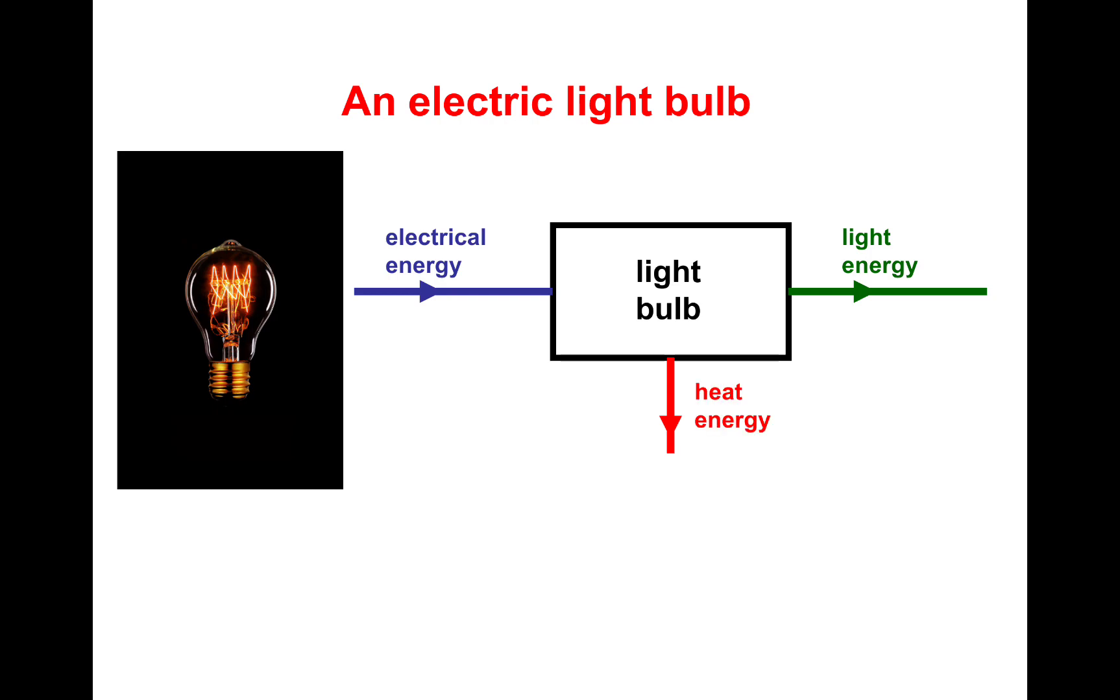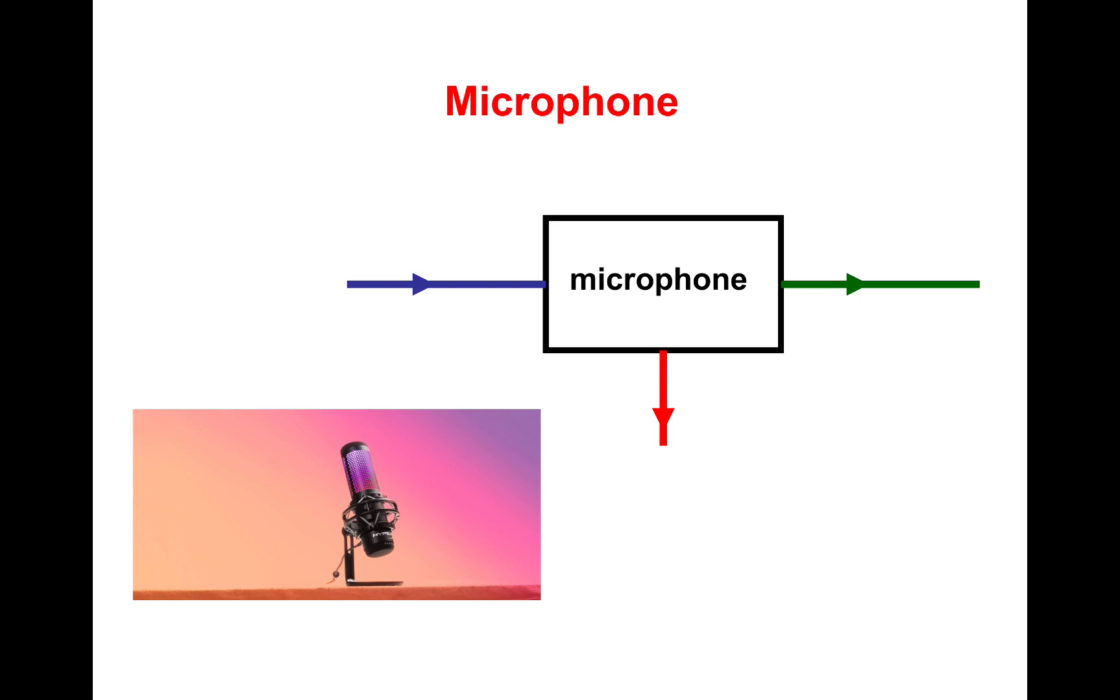So what I'm going to do is give you some more examples, and I just want you to pause and then write the energies. So here we go, microphone. Let's think about what energy goes in, what's useful, and what's wasted. Input energy is sound. So you're speaking to a microphone. The useful energy, the sound, is converted into electrical energy. And the wasted energy is heat energy. You'll find most of the time that most waste energies are heat or sound, but mainly heat.